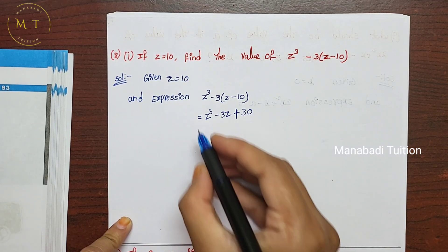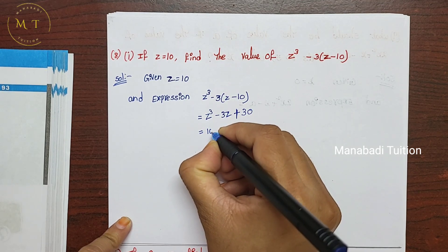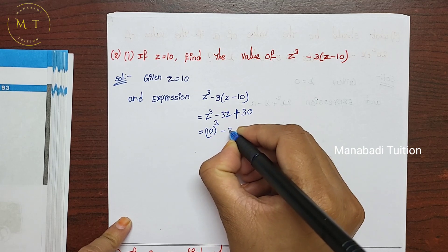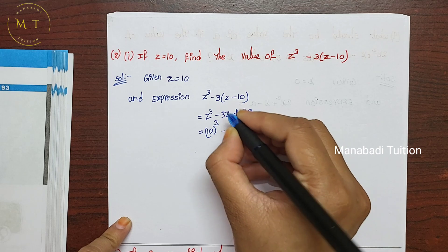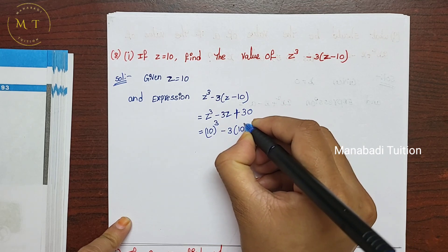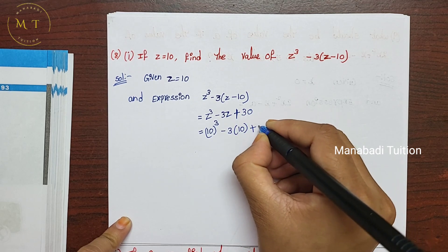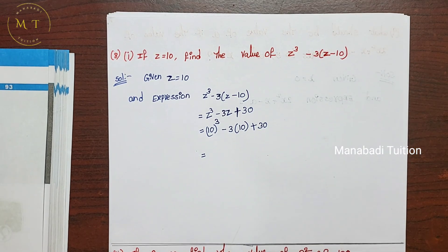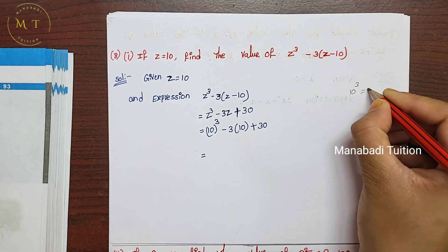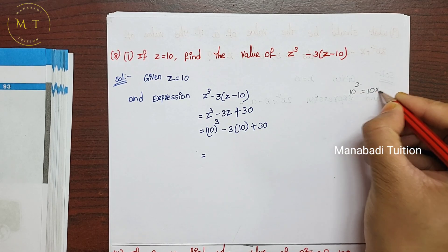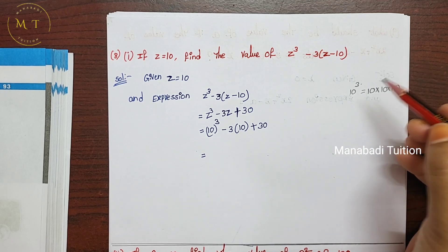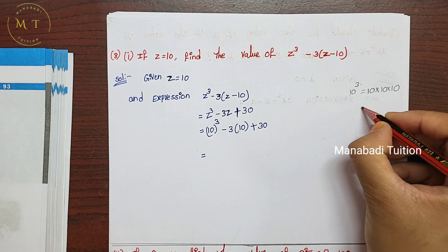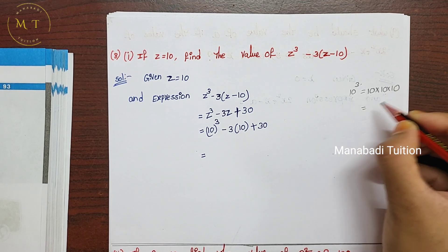Now substitute the z value. Z value is 10. So z cube — z place is equal to 10. 10 cube value: base is 10, exponent is 3. Multiply: 10 to 100 and 100 to 1000.